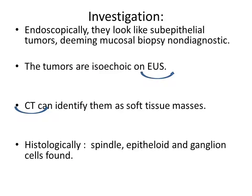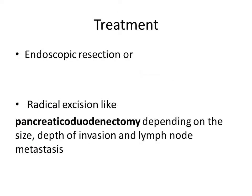For investigation, endoscopy is performed and on endoscopy tumors are isoechoic. CT scan can be performed to find soft tissue masses. Histologically, spindle, epithelioid, and ganglion cells are present in this tumor. For treatment, endoscopic resection or radical excision such as pancreaticoduodenectomy is considered depending on the size, depth of invasion, and lymph node metastasis.